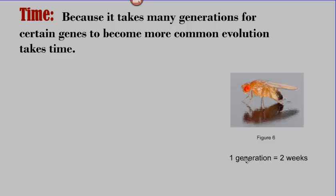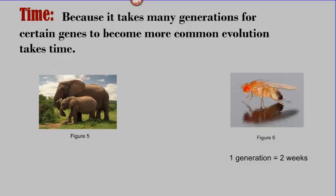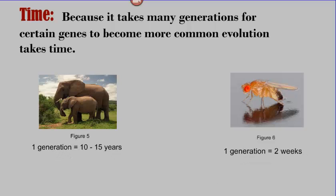Fruit flies, a subject of a lot of research in evolution, one generation for fruit flies, from adult to larva, to egg, to larva, to another adult that can reproduce, is about two weeks. Elephants, on the other hand, take about 10 or 15 years for one generation to occur. So evolutionary time moves more slowly for elephants than it does for fruit flies, or for bacteria.